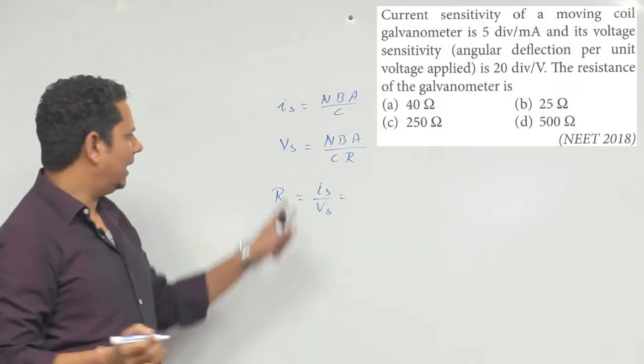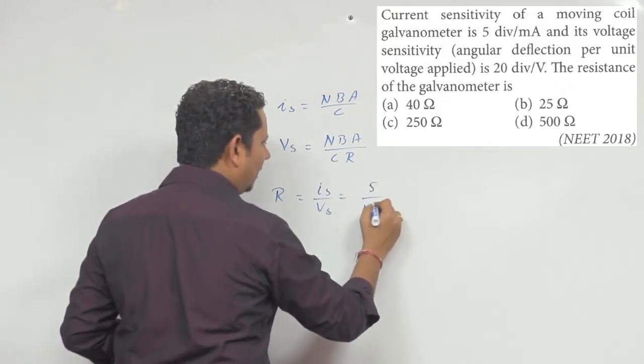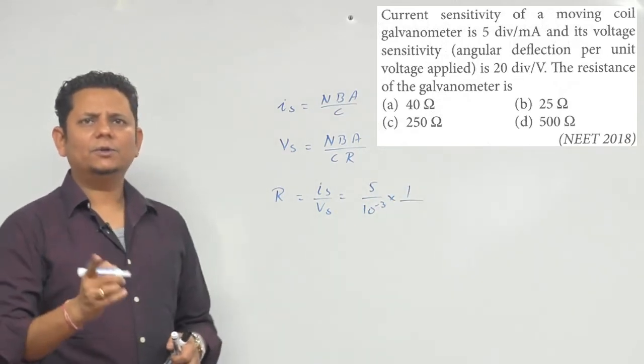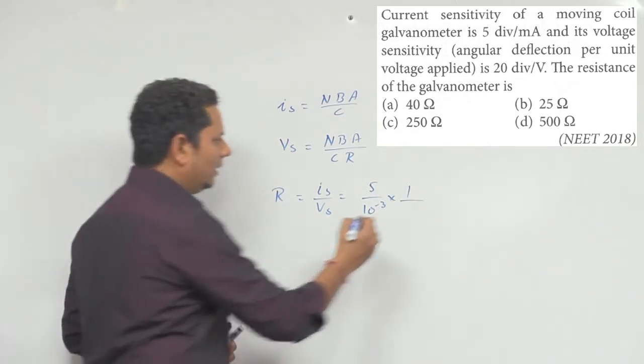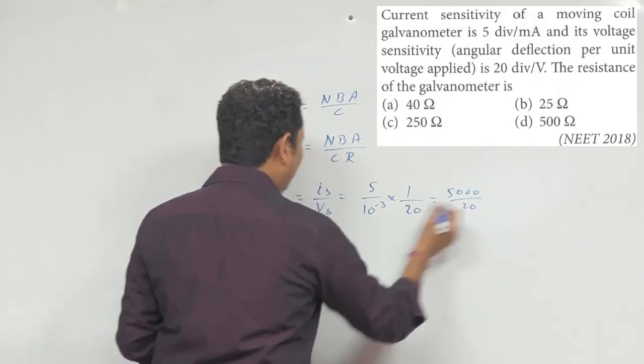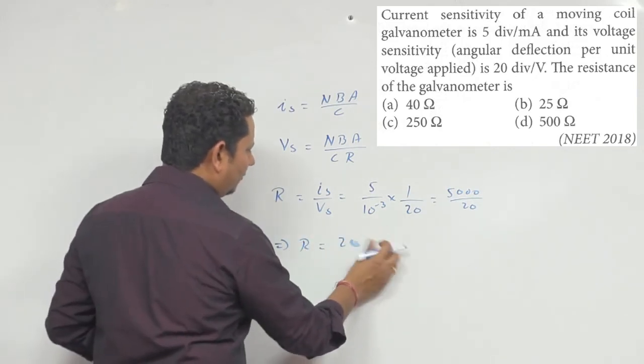यह 5 division per milliampere तो यह हो जाएगा 5 divided by 10 to the power minus 3. Vs अपने को दिया है 20 division per volt तो 20 हो जाएगा. इसका मतलब यह हो गया 5000 divided by 20, so which implies R की जो value है वो आ जाएगी 250 ohm.